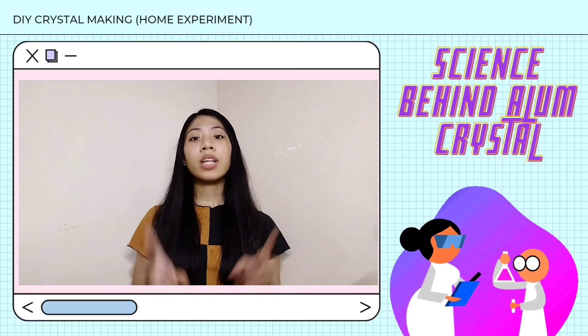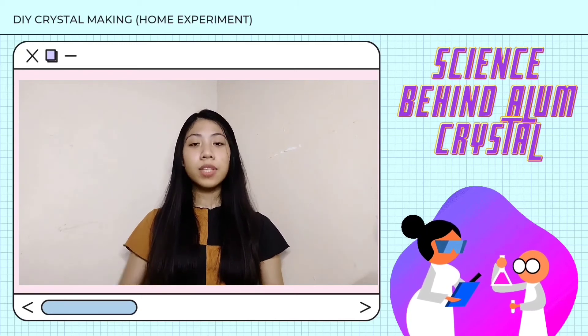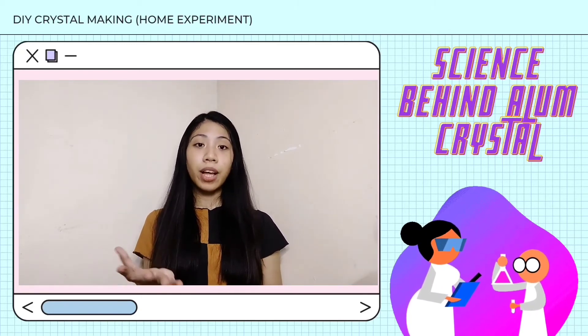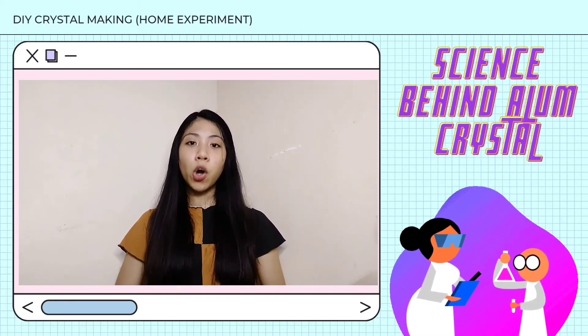When a supersaturated solution comes into contact with a seed atom or molecule or another impurity in the solution, the other alum comes out of the solution and binds to the seed. So crystals form. The more molecules attach, the larger the crystal will grow.